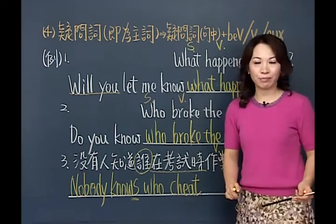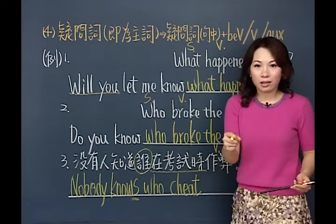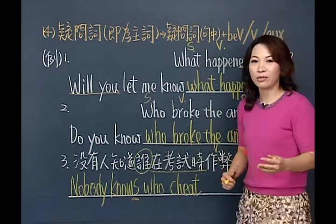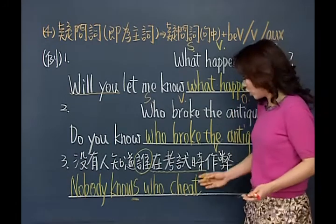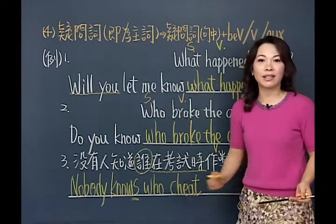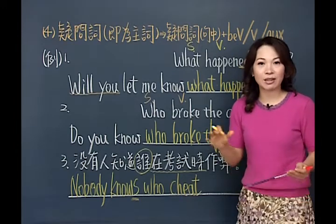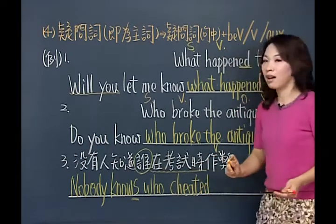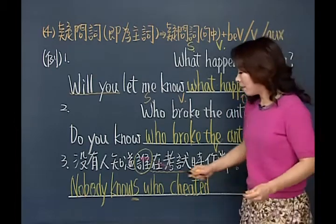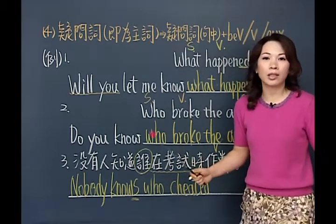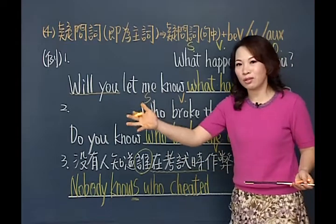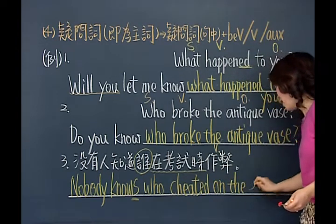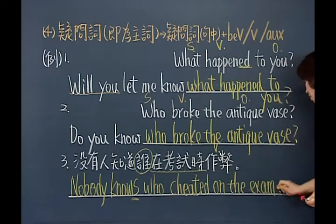没有人知道谁在考试的时候作弊。这件事情已经发生了，所以是过去的事情。疑问词本身就是主词，主词后面跟动词：动词叫作弊。Cheat这个动词（C-H-E-A-T），本意是欺骗，在考试当中的欺骗行为就是作弊。Who cheated，加了ED是过去式。在考试的时候：on the exam，后面用句点。